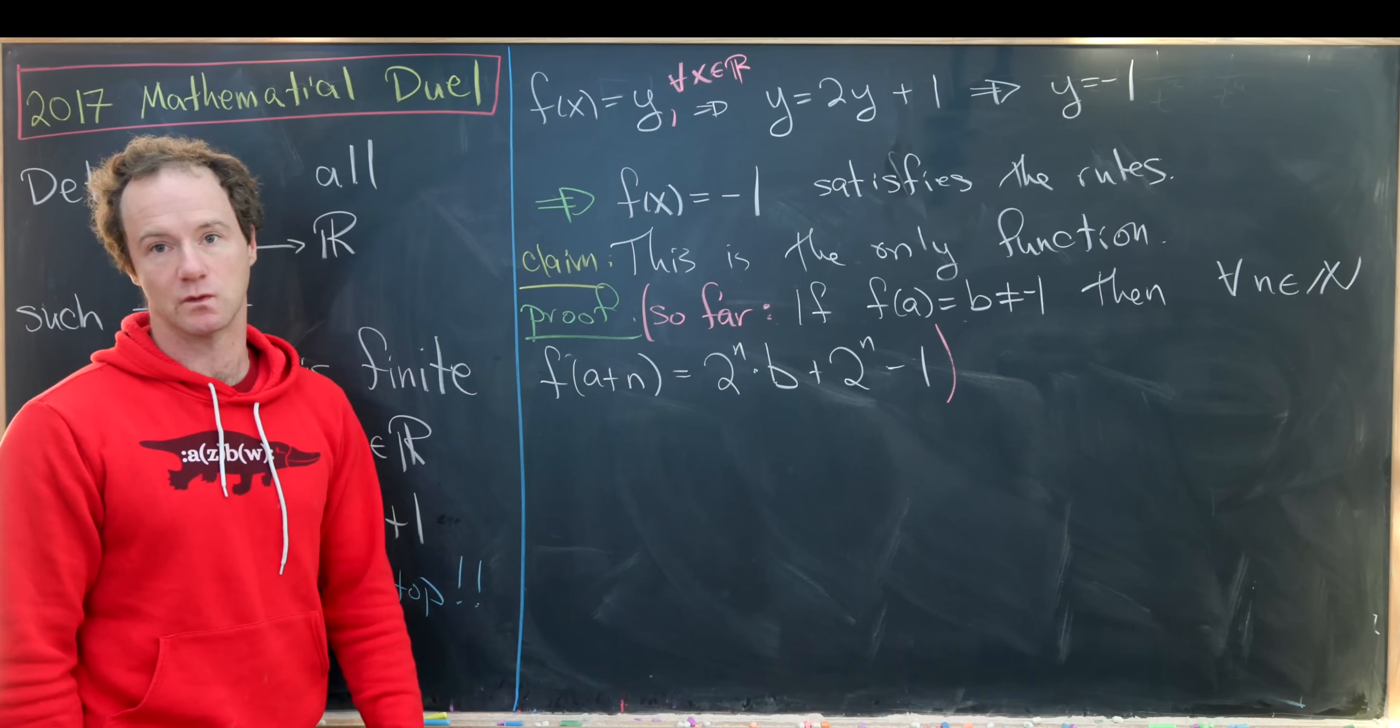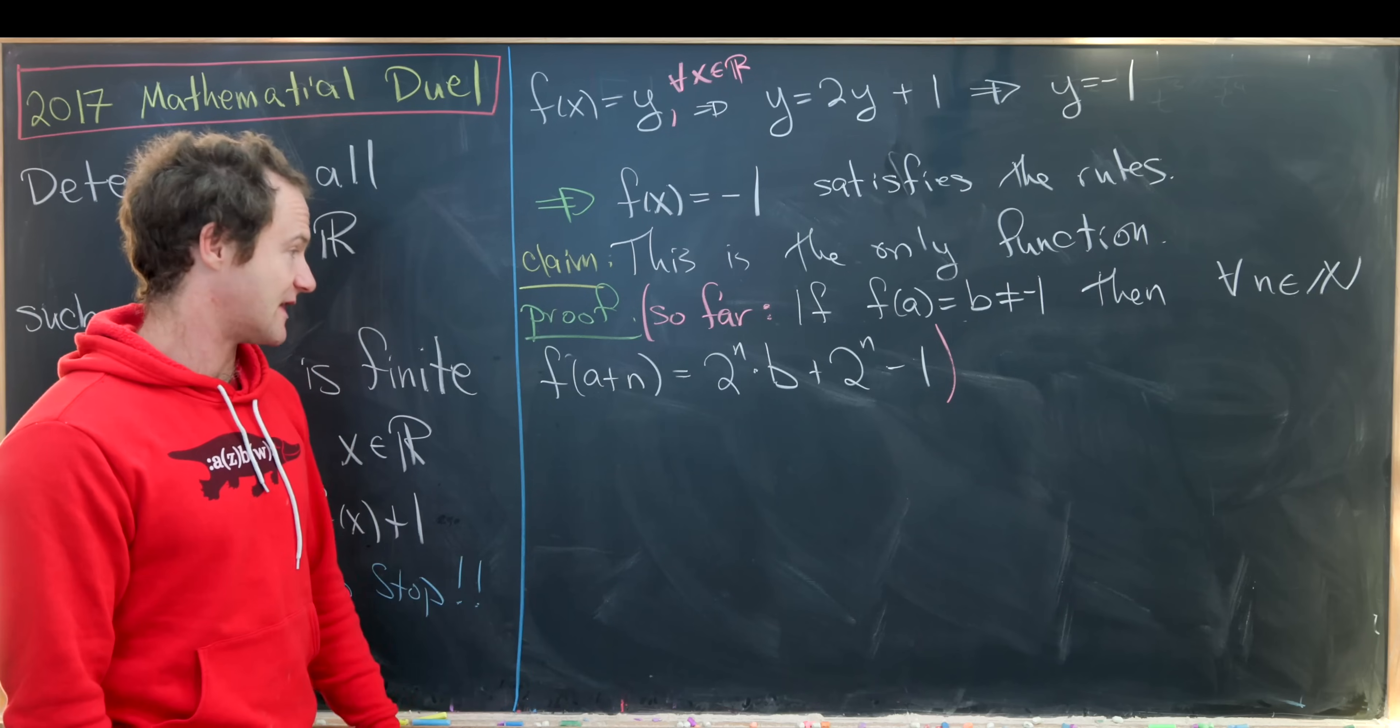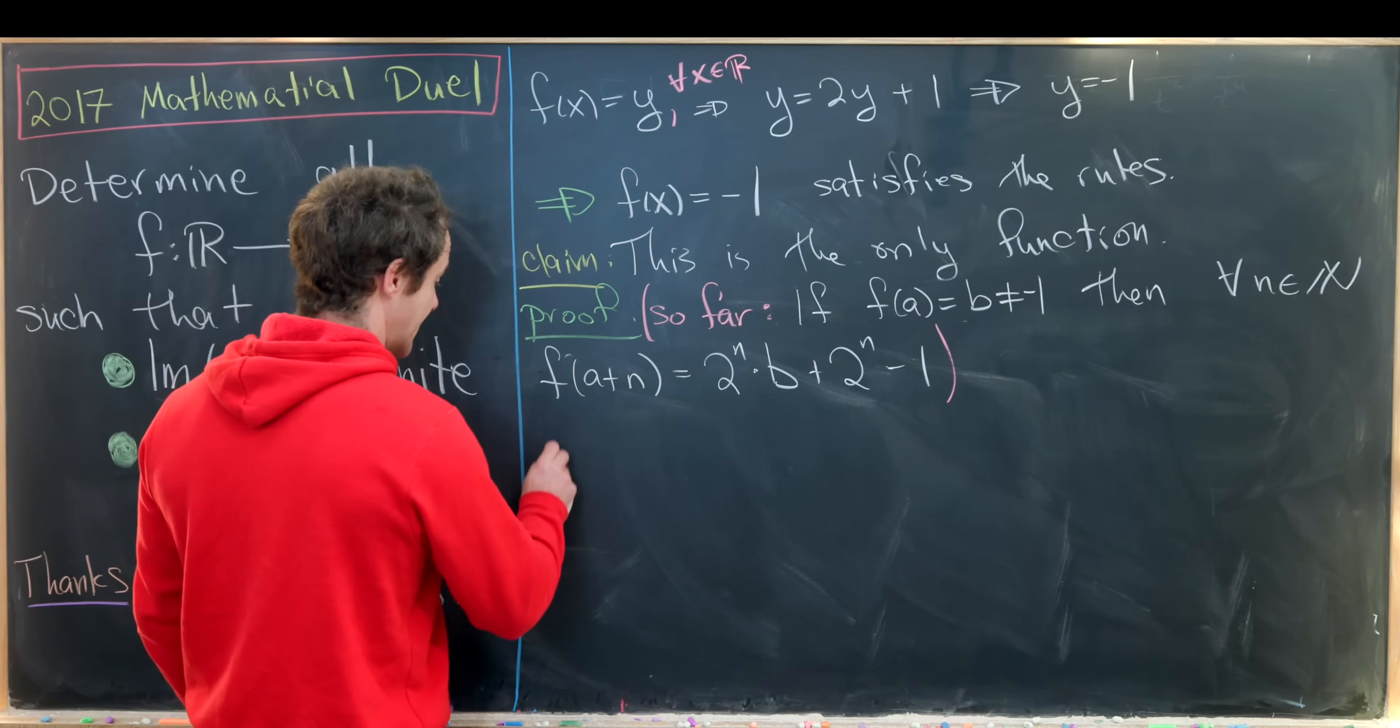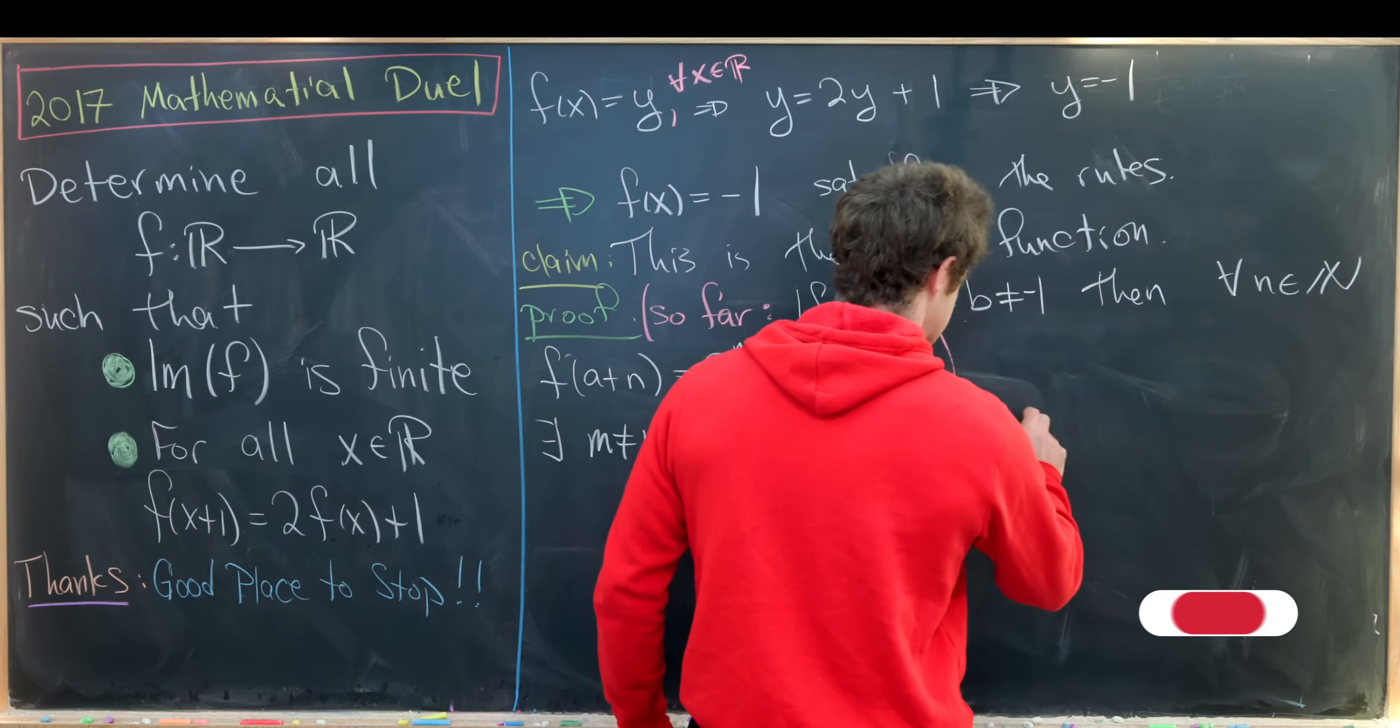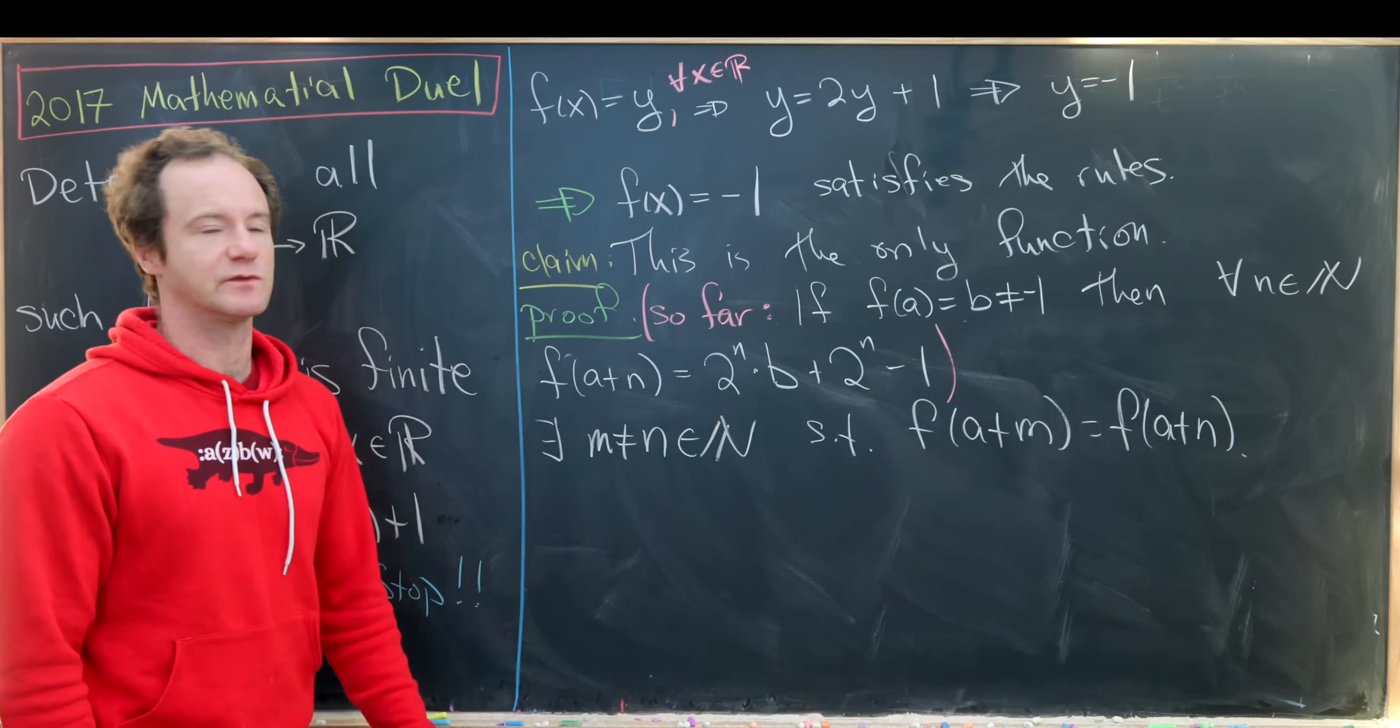2^n minus 1. Now we haven't applied this finite condition yet, so let's apply that finite condition. So this finiteness condition implies that there exists m which are not equal to n, both natural numbers, such that f(a+m) equals f(a+n), and that's because otherwise this thing would take on